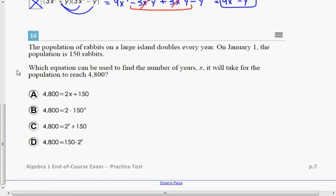Question number 16. The population of rabbits on a large island doubles every year. On January 1, the population is 150 rabbits.